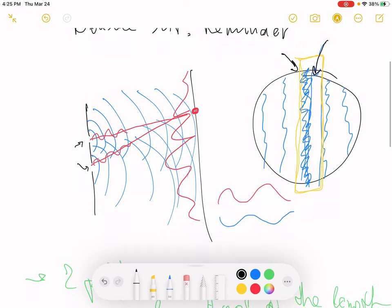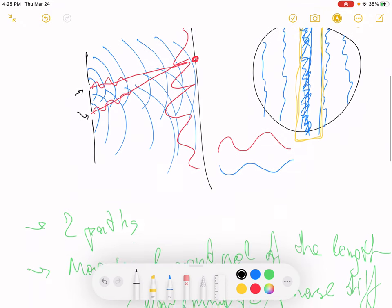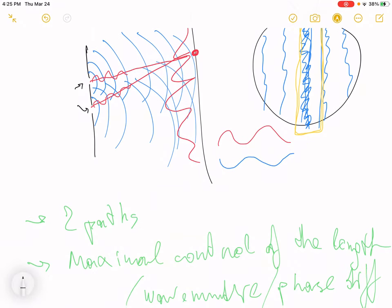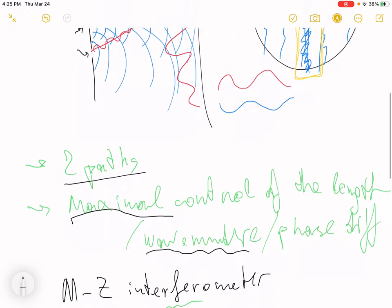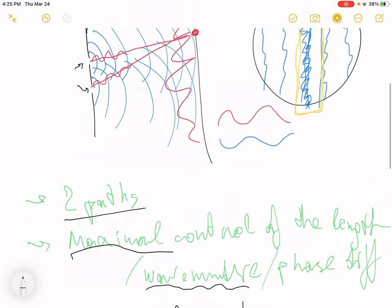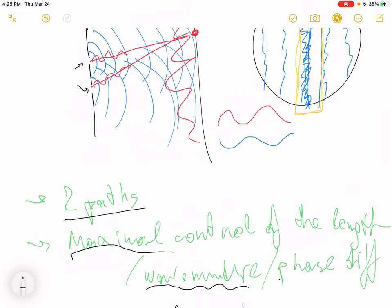In order to do that, we want our system to have two properties. It should have minimal amount of paths, just two paths leading to a particular point. And we want to have maximal control of the length of those paths. We would like to change the relative length of those paths, or in other words the relative wave number, or control the phase difference between the two paths.